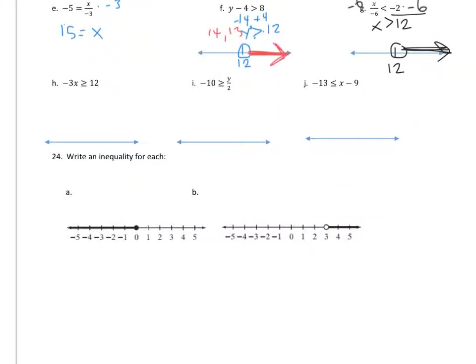H: I'm going to divide both sides by negative 3. When I divide by negative 3, instead of greater than, it's going to be less than or equal to, because I'm dividing by a negative number. So this is negative 4 — make a closed dot at negative 4 and go to the left. Numbers less than negative 4, like negative 5 and negative 6, go in that direction.